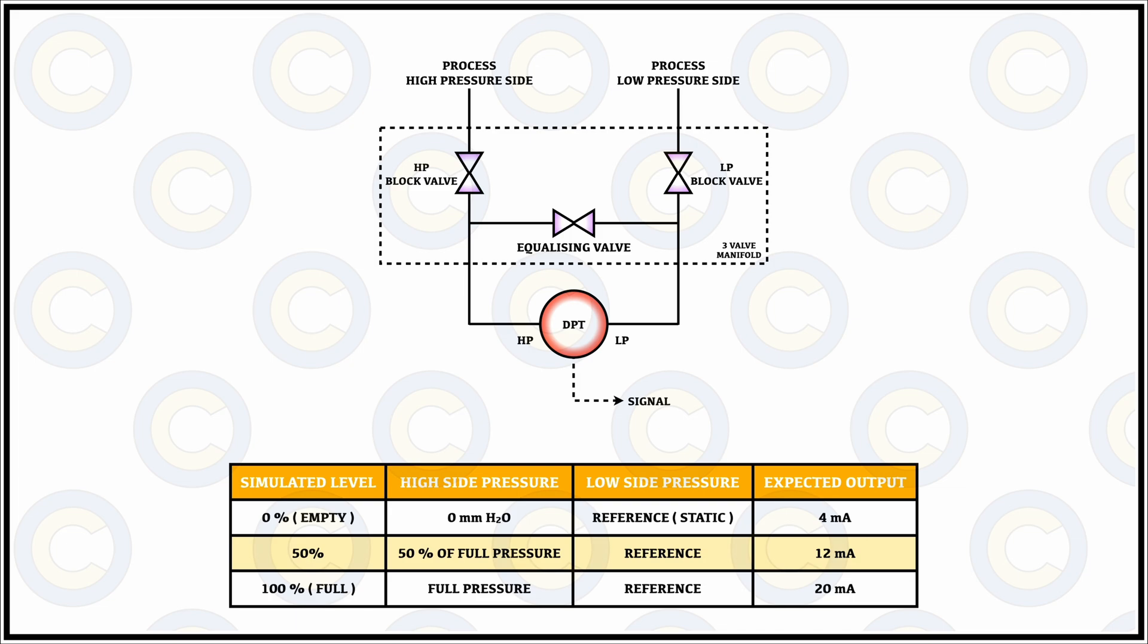The zero and the span knob or the adjusting screws that are available, the zero setting would allow you to ensure the minimum setting value, for example in the DP transmitter it is the 4 milliamps for the lowest level or basically the zero level.